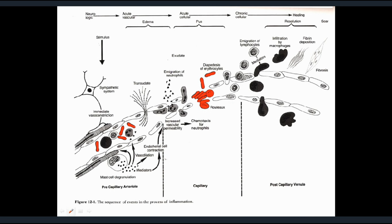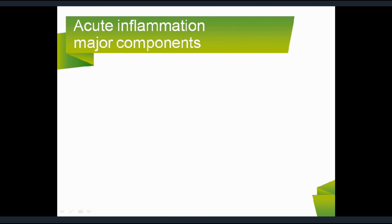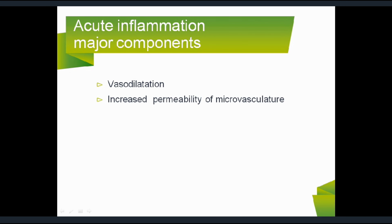There is another process showing the precapillary arteriole, capillary, and postcapillary venules. The major components of acute inflammation are: vasodilation, increased vascular permeability — which occur in the microvasculature — these two are vascular changes. The third is extravasation or margination of cells, or polymorphs, from the vasculature to the site of injury. So there are two types: vascular events and cellular events.